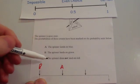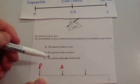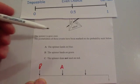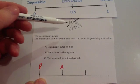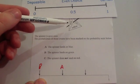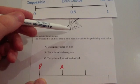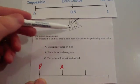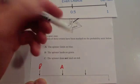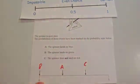C is the spinner does not land on red. There are two sections that are not red — blue and yellow — so that's 2 out of 3, which is quite likely. So C is marked up in the likely region.